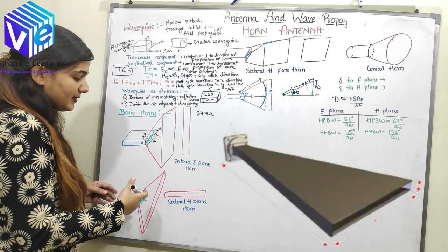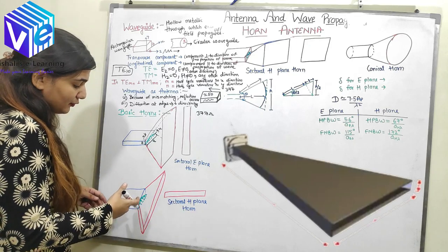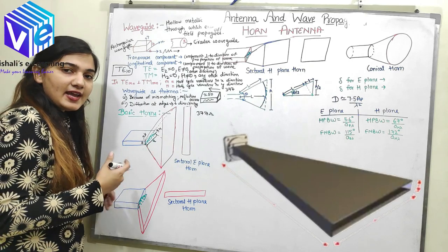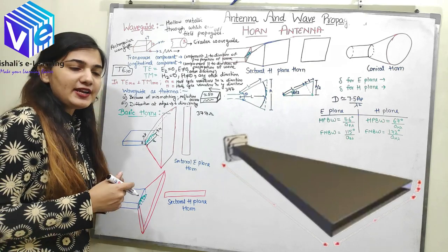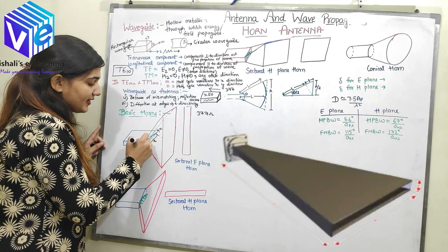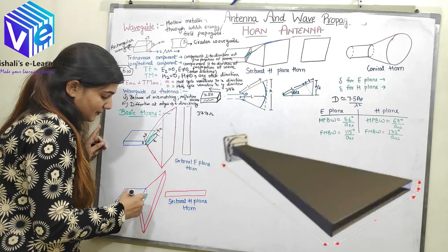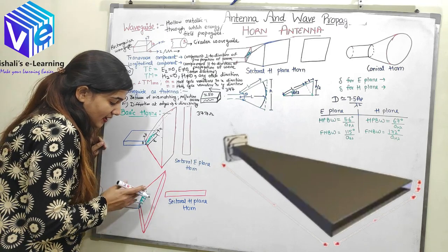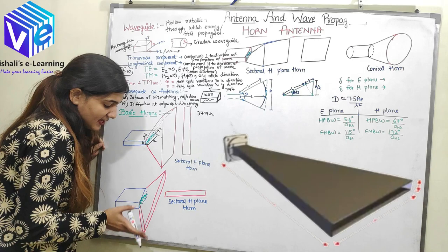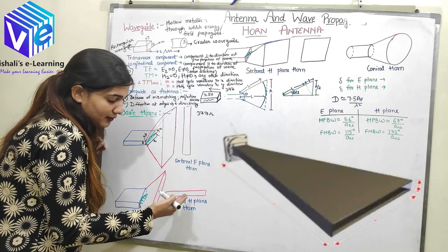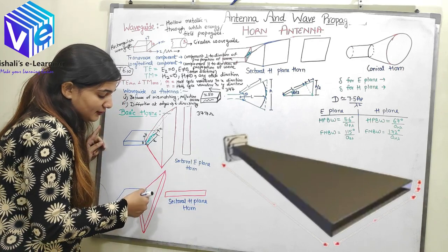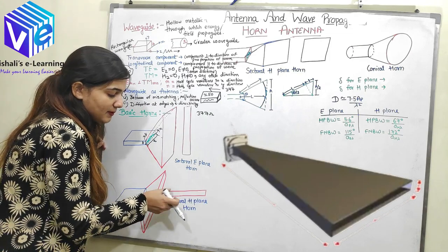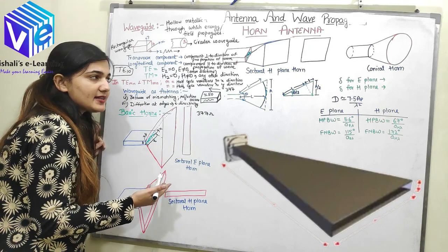Similarly, for sectoral H-plane horn, I would flare out the H field. The H field is always perpendicular to the E field, so if my E field is in Y direction, H field should be in X direction. If I flare out the X side, I will get the sectoral H-plane horn. In the front view of the sectoral H-plane horn, the H plane has flared out and the E plane remained as it is.